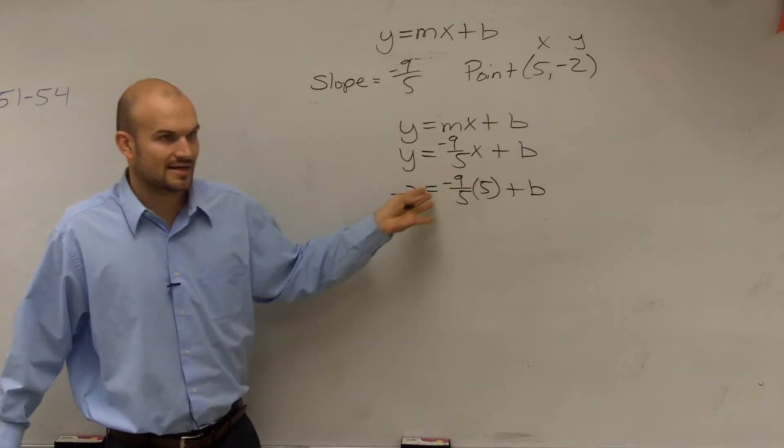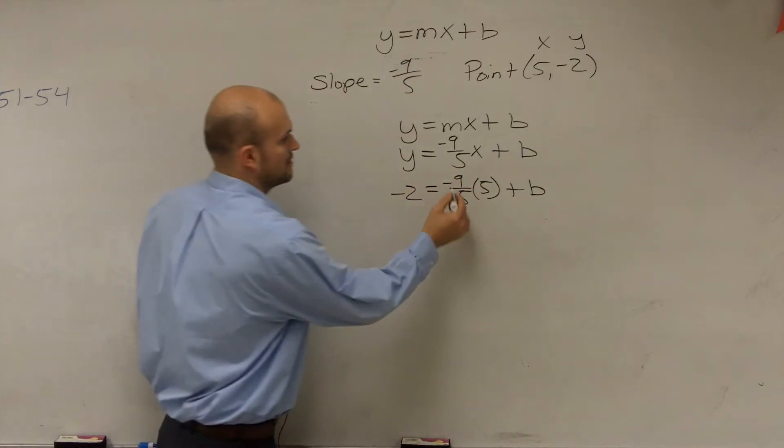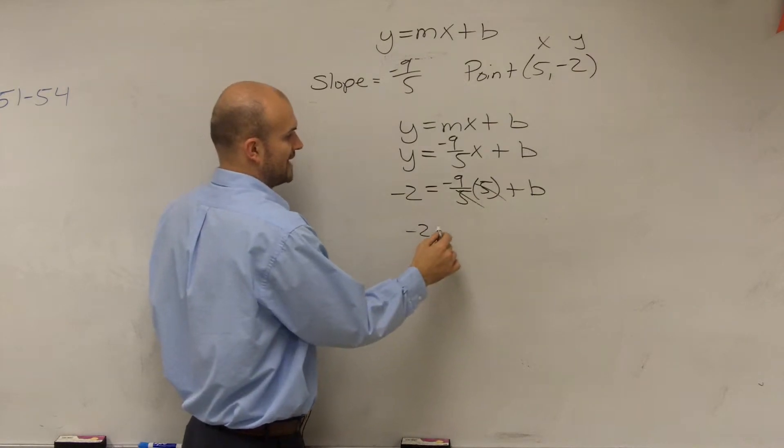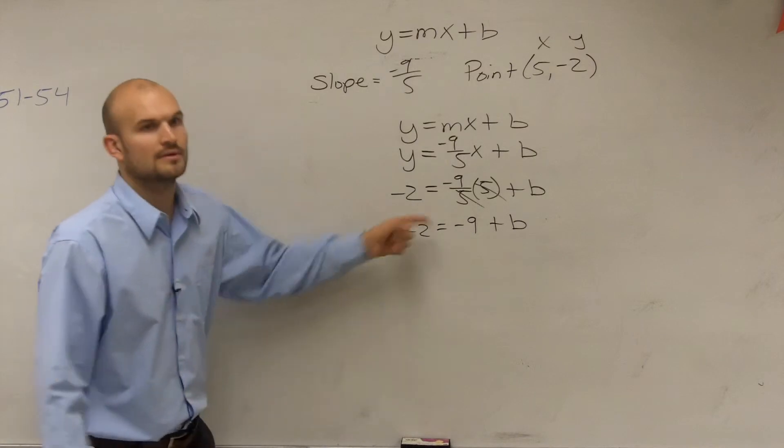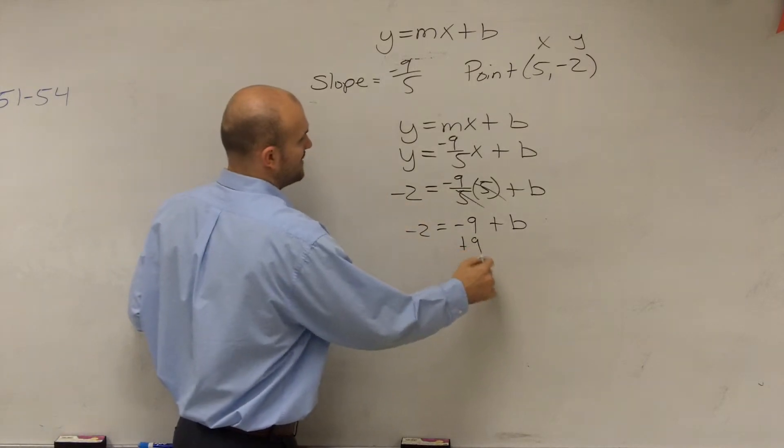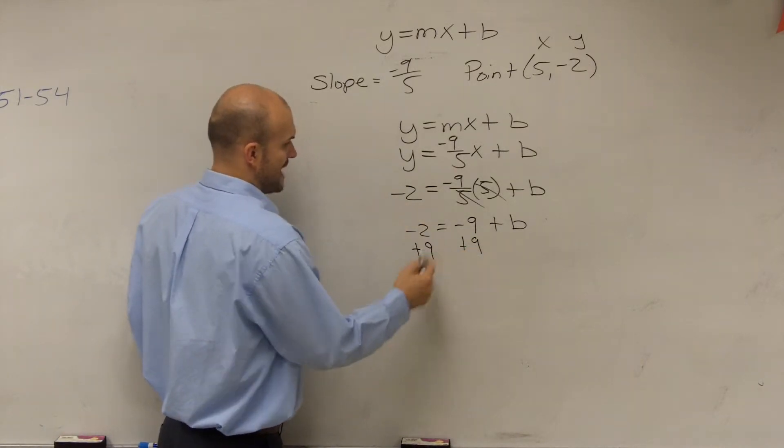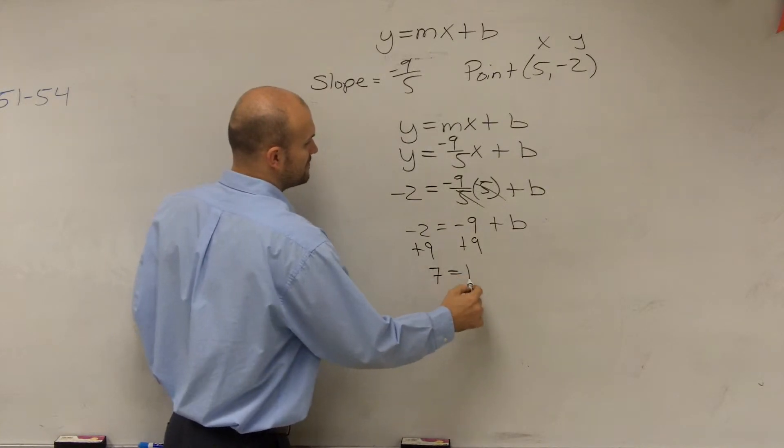Now remember, practice multiplying your fractions. Those are going to divide to 1. So you have negative 2 equals negative 9 plus b. And you add 9. Solve for b. And now what you get is positive 7 equals b.